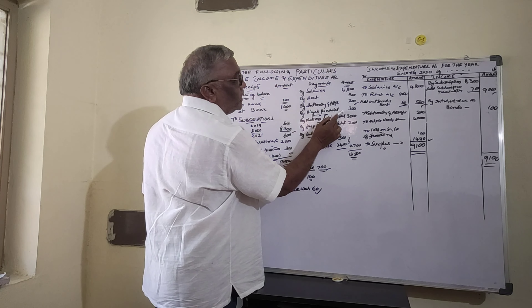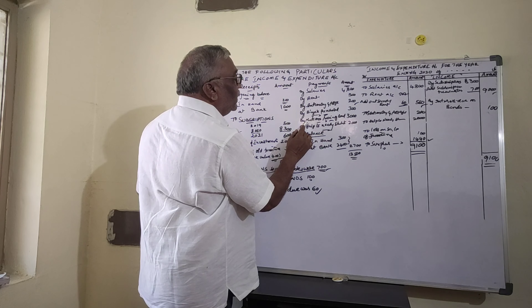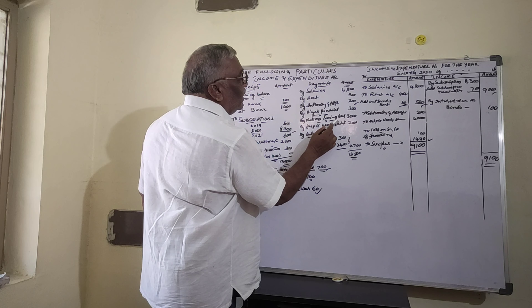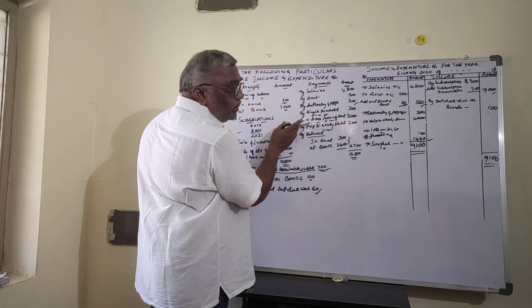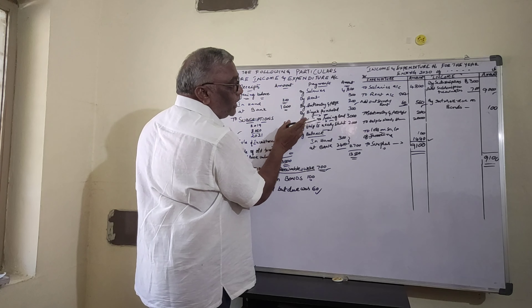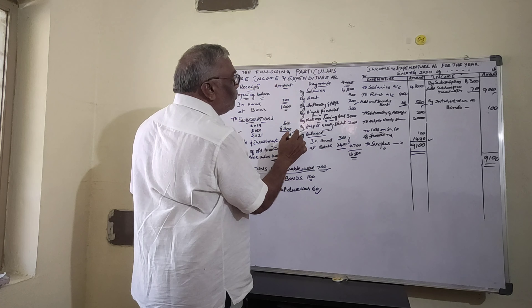Bicycle purchase is an asset purchase and is not entered into the income and expenditure account. Similarly, national savings bonds are an asset purchase and are also excluded from the income and expenditure account.